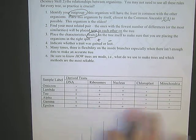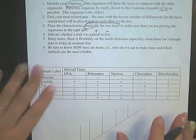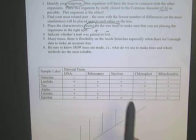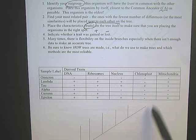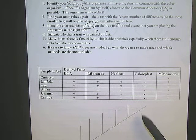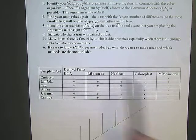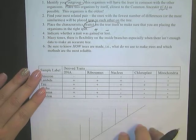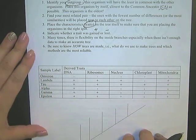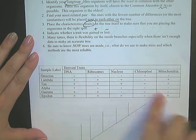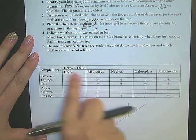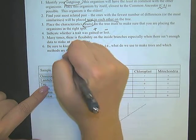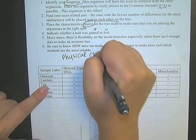And then understand that when you do these many times, there's flexibility in the tree itself. Some organisms can be switched. Go back and double check to make sure that what you are stating on here is true according to the data that you were given. And then be sure to know how trees are made. In other words, what do we use to indicate and make these trees with the different organisms. In this particular case where you have a derived trait with the organisms on one side and the physical characteristic, that's what we're going to be doing in this particular video.